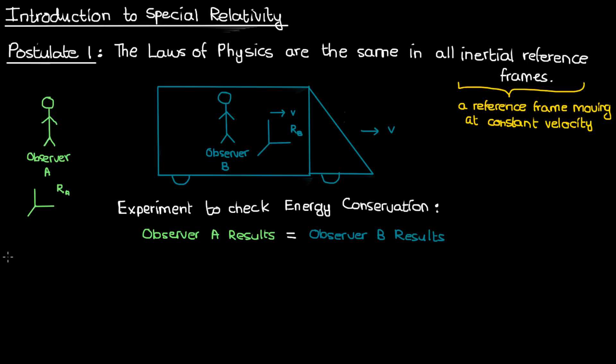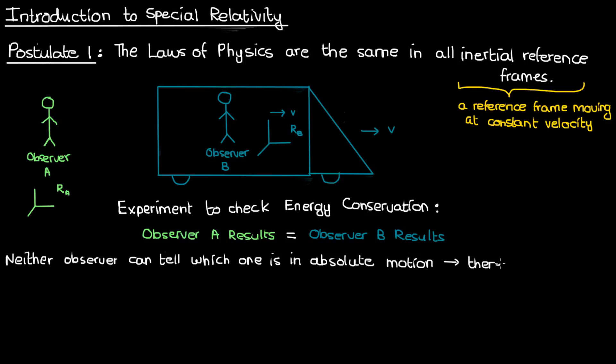When observer B looks out the train window, you can't tell whether observer A is moving backwards or whether observer B himself is moving forward. Similarly, observer A won't be able to tell whether he's moving backward or whether the train is moving forward. So neither observer has a good way of telling which one is moving using the laws of physics, and the implication is that there's no such thing as absolute motion — only relative motion.